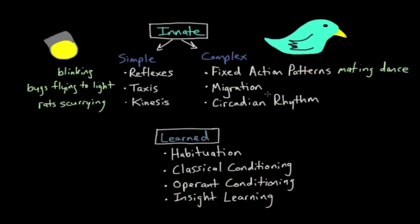Migration is another complex behavior. You can think of it, in context of birds, as birds flying south for the winter. Migration is another complex form of an innate behavior.